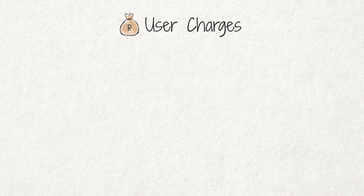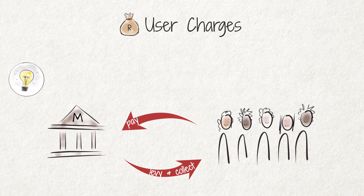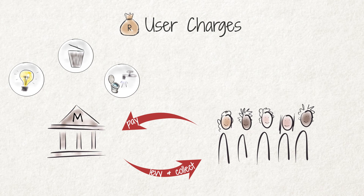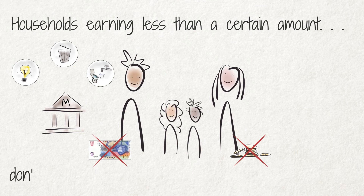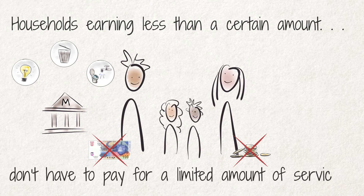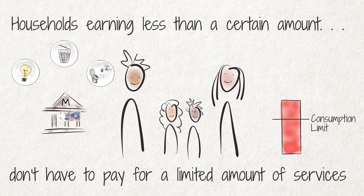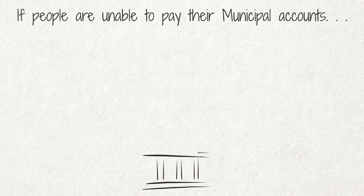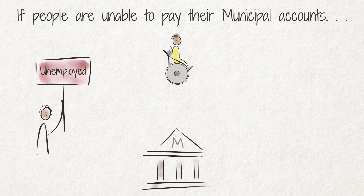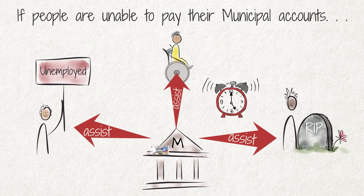Municipalities also levy and collect fees for the usage of services such as electricity, refuse collection and water and sanitation services. Households earning less than a certain amount, determined by the municipality, don't have to pay for a limited amount of municipal services. However, when consumption limits are exceeded, people have to pay for the extra consumption. If people are unable to pay their municipal accounts due to loss of employment, illness or death in the family, the municipality can assist in granting more time to pay or to reduce the debt.